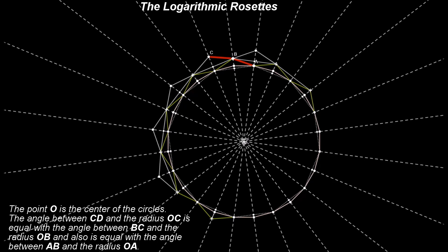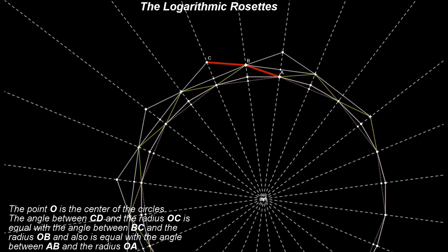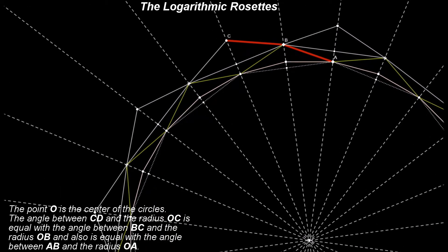Let us continue our construction and add a new circle following a similar approach. First, we need to find the location of point D. Again, the angle between CD and the radius OC is equal with the angle between BC and the radius OB, and also is equal with the angle between AB and the radius OA.